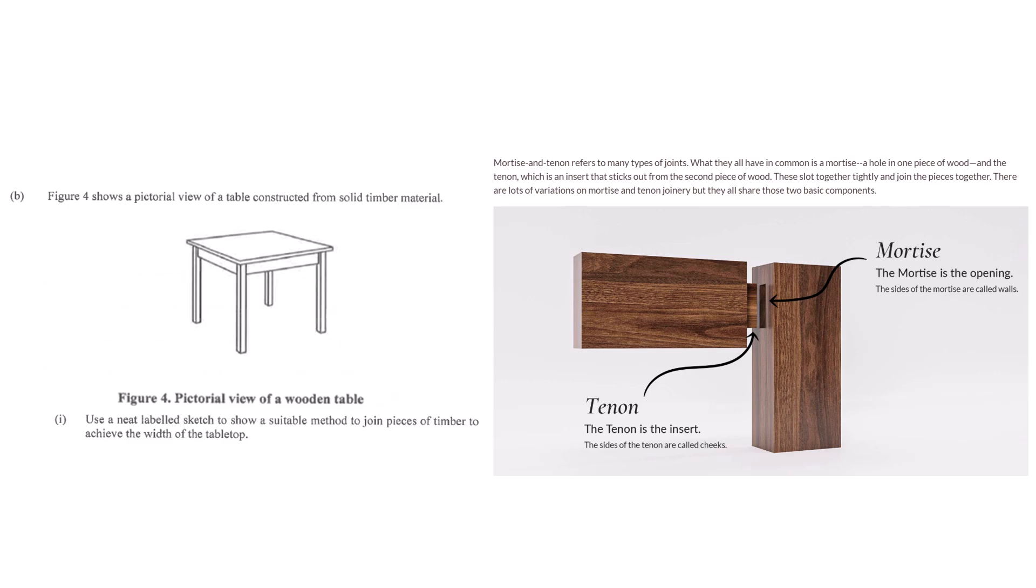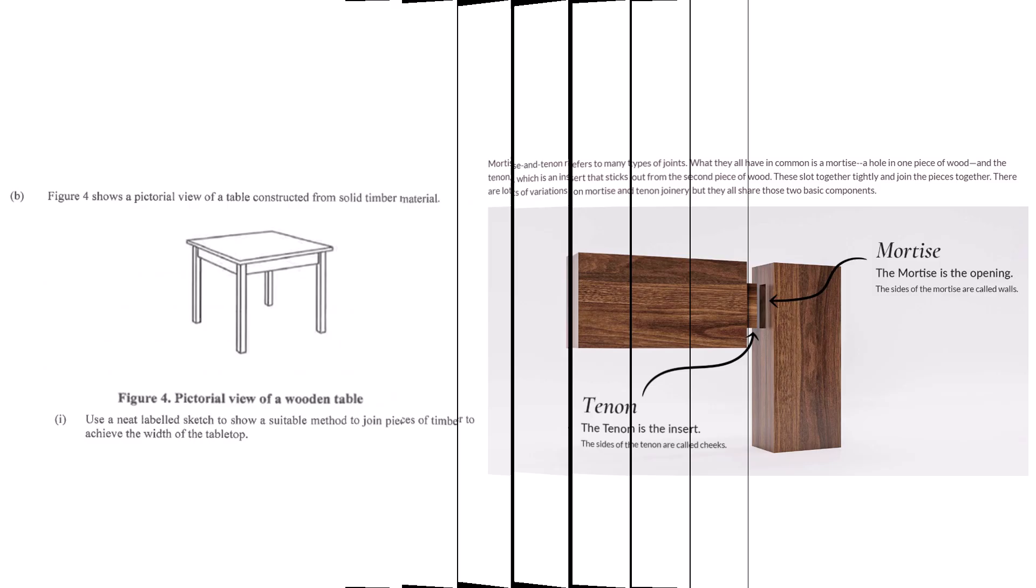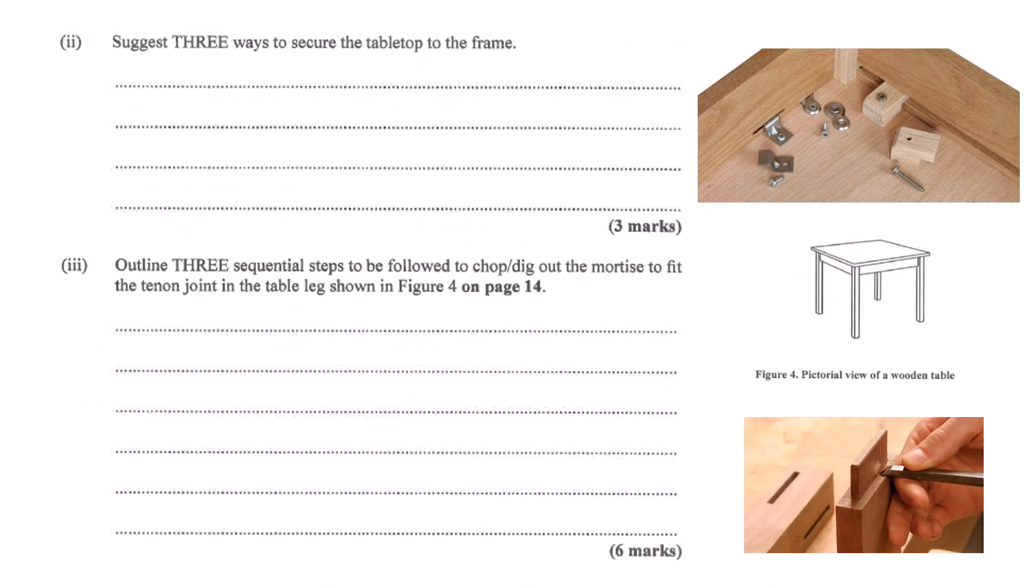So once you have that lovely solid tabletop made, how do you actually attach it to the frame underneath? You can use glue along the top edges of the frame, especially for smaller tables. Another simple way is using screws driven up through little wooden corner blocks attached inside the frame. But for larger tabletops, especially solid wood ones, you often need something more clever like special tabletop fasteners. Because wood moves - solid wood expands and contracts slightly with changes in humidity in the air. If you rigidly fix a wide tabletop with just screws or glue, when the wood tries to expand it can't and it might crack or warp under the stress.